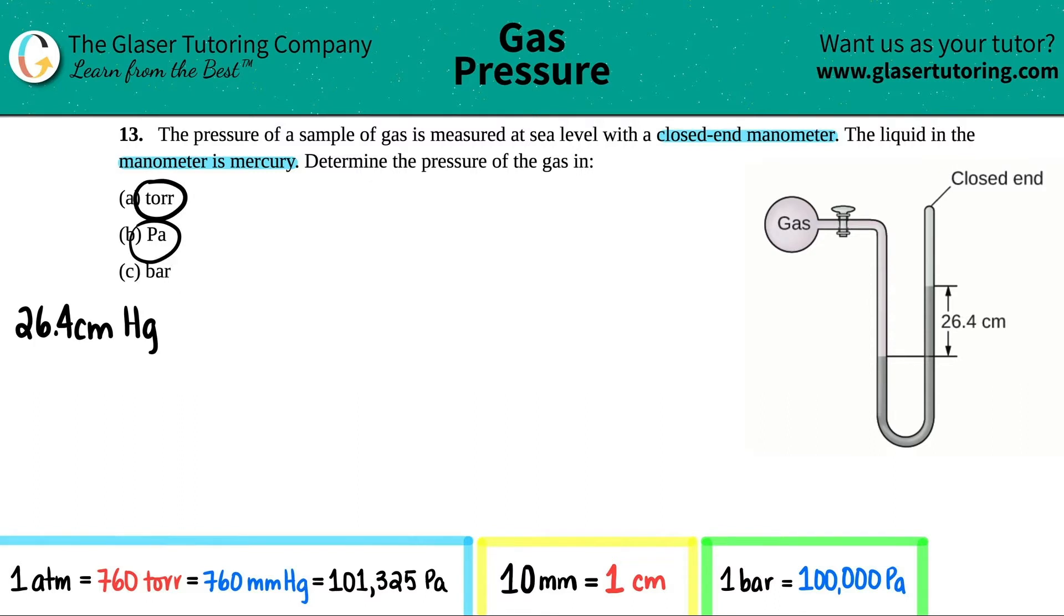For each one of these we have to convert centimeters of mercury into torr, pascal, and bar. Let's start with the first one. Let's start with what we're given: 26.4 centimeters of mercury. Now if we want to go to torr, here are all the conversions we should know for our gas chapter. A torr is a unit of pressure and it can be linked with millimeters of mercury.